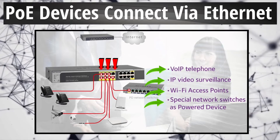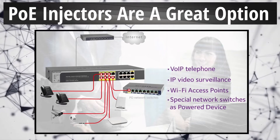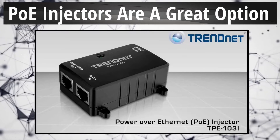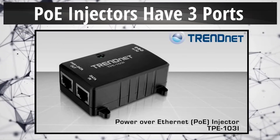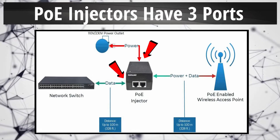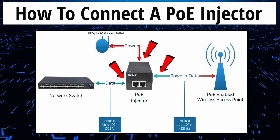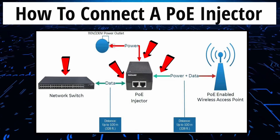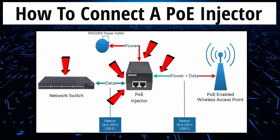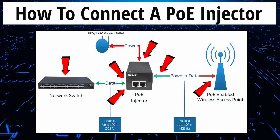Now, if you don't have a PoE switch and you're not planning on buying one, then you can buy a PoE injector. A typical PoE injector has three ports: a power input, a data input, and a power data output. So all you have to do is connect an Ethernet cable from a non-PoE switch to the injector, plug in the power to the injector, and then connect the cable from the PoE device to the injector.